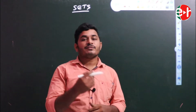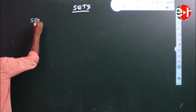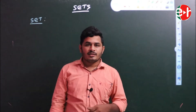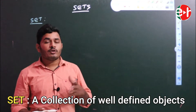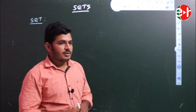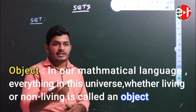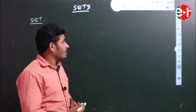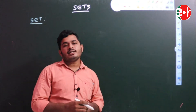What is the actual definition of a set? The definition of a set is: a collection of well-defined objects is called a set. What do you mean by well-defined objects? First, what is an object? In mathematics, we consider all living things and non-living things in the universe as objects. So, a collection of well-defined objects is called a set.